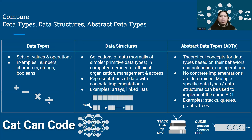First, let's understand data types. Data types are defined as the sets of values and operations on those values. For example, we have numbers, characters, strings, and booleans.